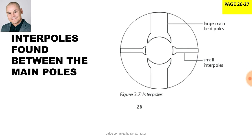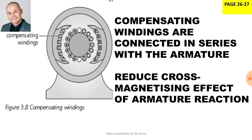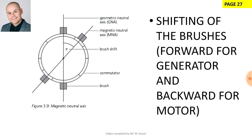Interpoles are found between the main poles. Compensating windings are found in the slots of the pole shoe. The armature windings and the current through them also flow through the compensating windings; therefore, they are connected in series. For a generator, we shift the brushes forward, and for a motor, we shift the brushes backwards. There are two axes — the geometric neutral axis — and when we shift the brush, we shift it towards the magnetic neutral axis.